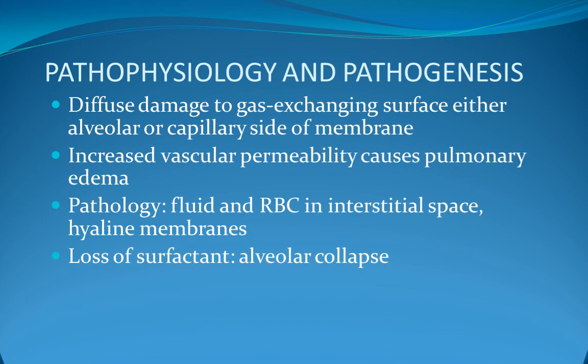ARDS progresses through phases: Phase 1 — acute injury with normal physical examination and possible respiratory alkalosis. Phase 2 — at 6-8 hours, hyperventilation, hypocapnia, and widening of the A-a gradient. Phase 3 — acute respiratory failure with tachypnea, dyspnea, decreased lung compliance, scattered rales, and diffuse chest opacity on chest x-ray. Phase 4 — severe hypoxemia refractory to therapy, increased intrapulmonary shunting, and metabolic and respiratory acidosis.